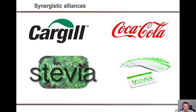A synergistic alliance example: Cargill, which makes Stevia, came together with Coca-Cola to create Truvia. Cargill had the Stevia but needed to optimize its sweetness, and Coca-Cola had massive distribution. They created the alliance to improve the product and then distribute it, and obviously that has done very well.